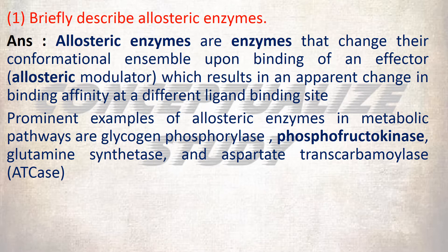Prominent examples of allosteric enzymes in metabolic pathways are glycogen phosphorylase, phosphofructokinase, glutamine synthetase, and aspartate transcarbamylase.